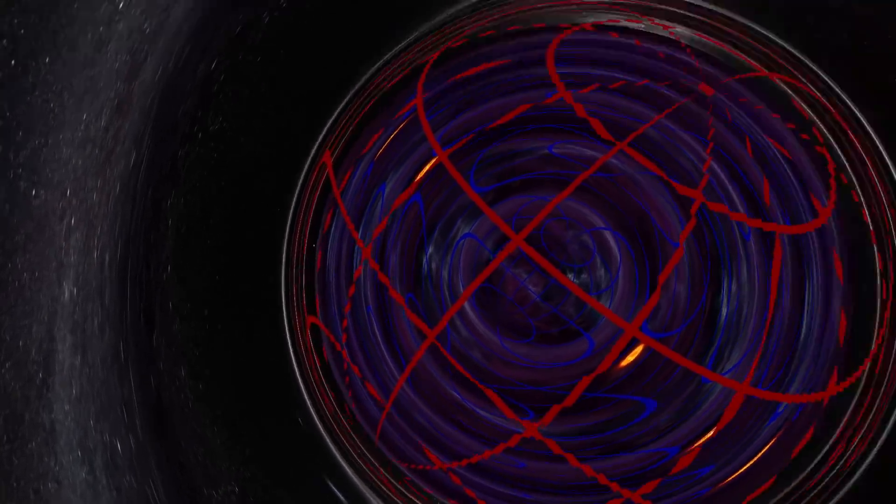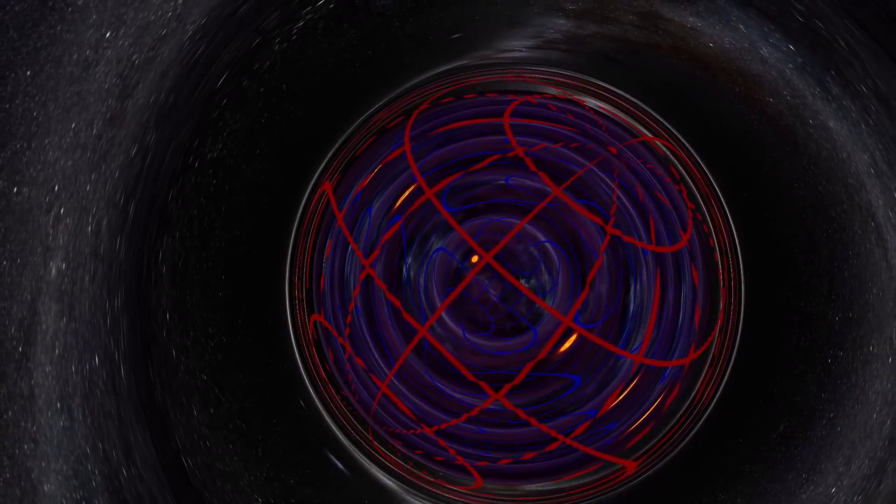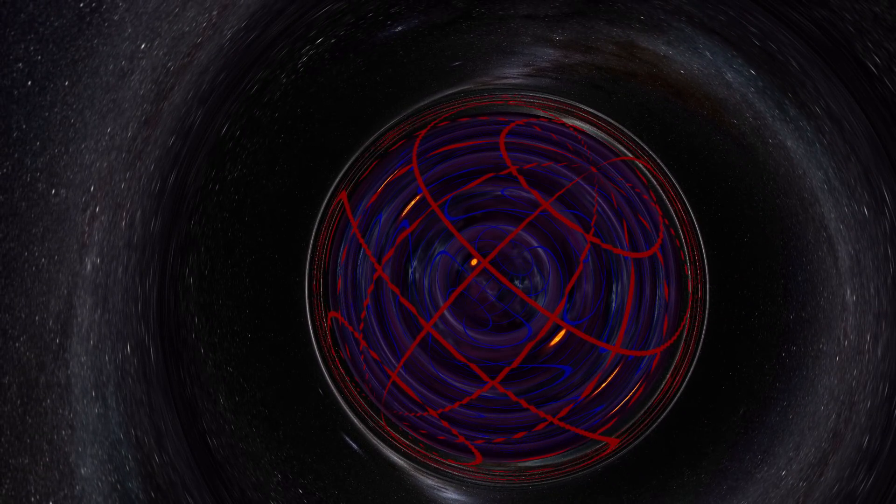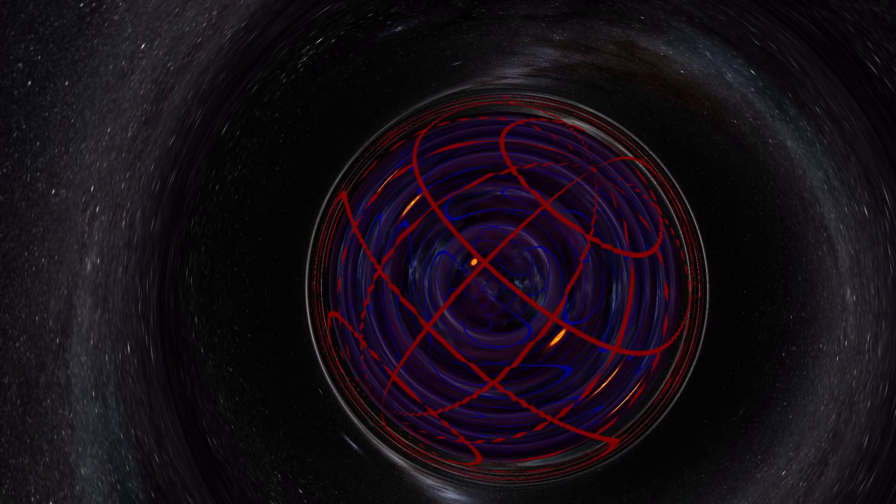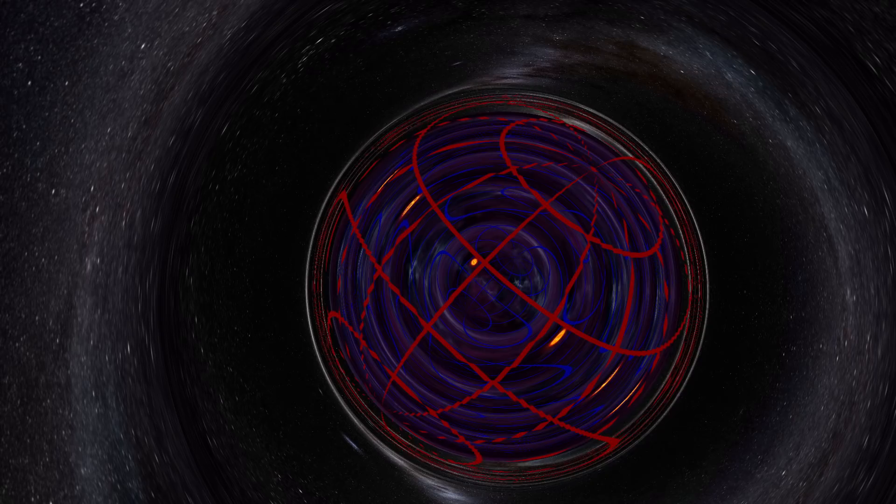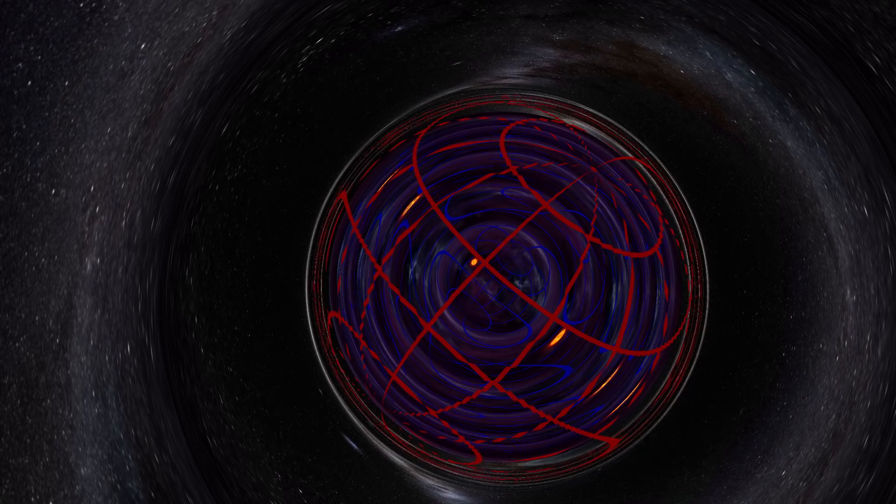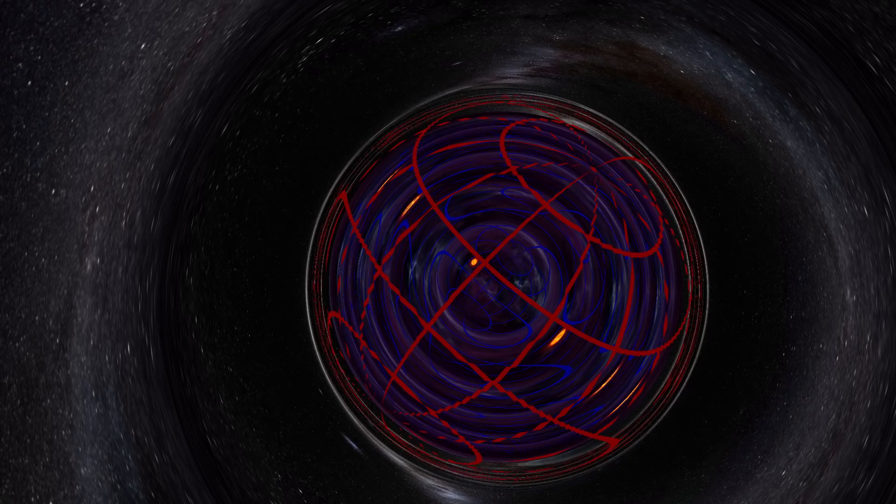Each side of a wormhole is mathematically equivalent to a black hole, where a black hole goes into a condensed point.